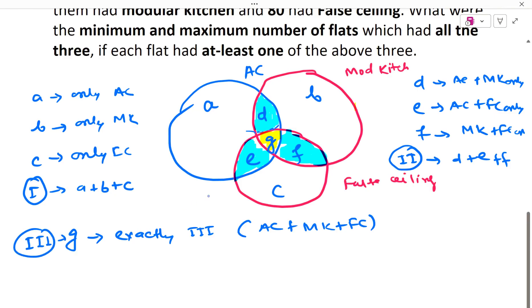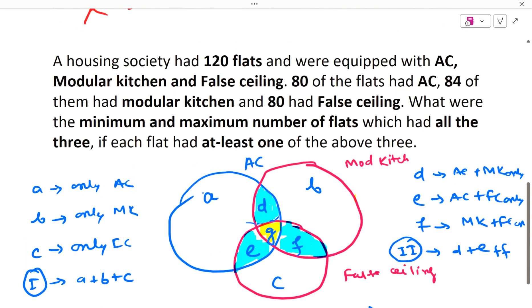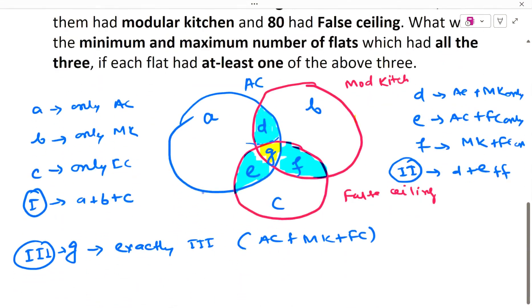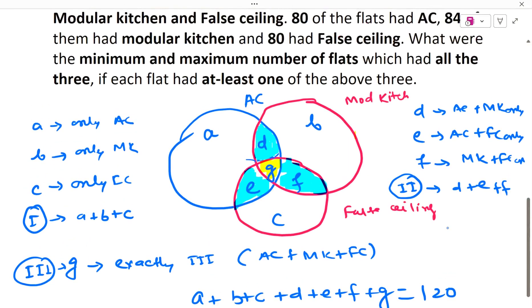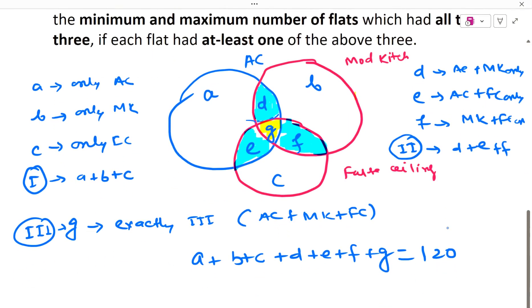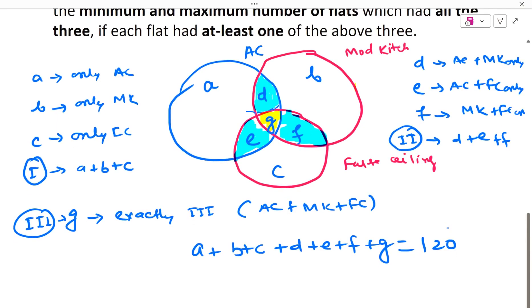So whatever values we have been given is that there are 120 flats. So it exactly means that your A plus B plus C plus D plus E plus F plus G is equal to 120. As there are no flats without any of these facilities, so each flat has at least one of the above three. So none is zero. If there would have been a none where we had some number, then I would have to include that also. But that is not the case. So for me, the none is zero.